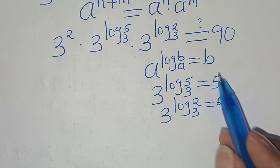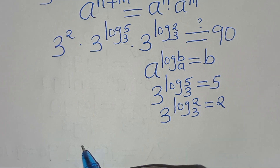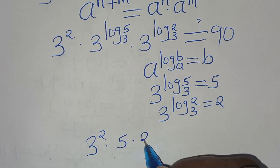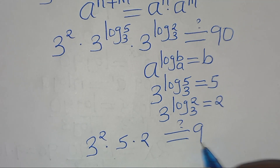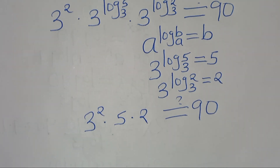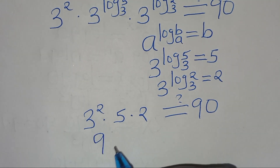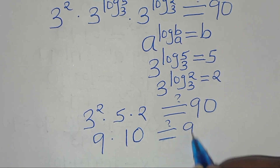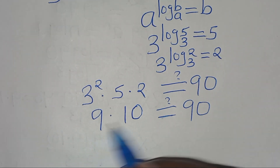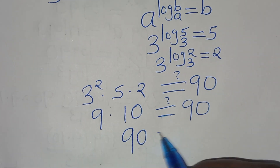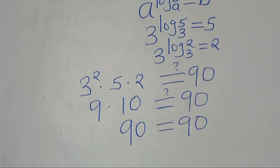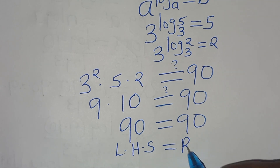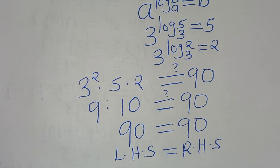Substituting back into the equation, we have 3 squared multiplied by 5 multiplied by 2, which should equal 90. So 3 squared is 9, and 9 times 5 times 2 — that is 9 times 10 — equals 90, which indeed equals 90. This confirms that the left-hand side equals the right-hand side.